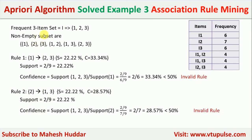For the itemset {1, 2, 3}, the non-empty subsets and their frequencies are listed. Rule 1: {1} → {2, 3}. Support is 22.22%. Confidence = support(1,2,3) / support(1) = (2/9) / (6/9) = 2/6 = 33.34%, which is less than 50% — invalid rule.